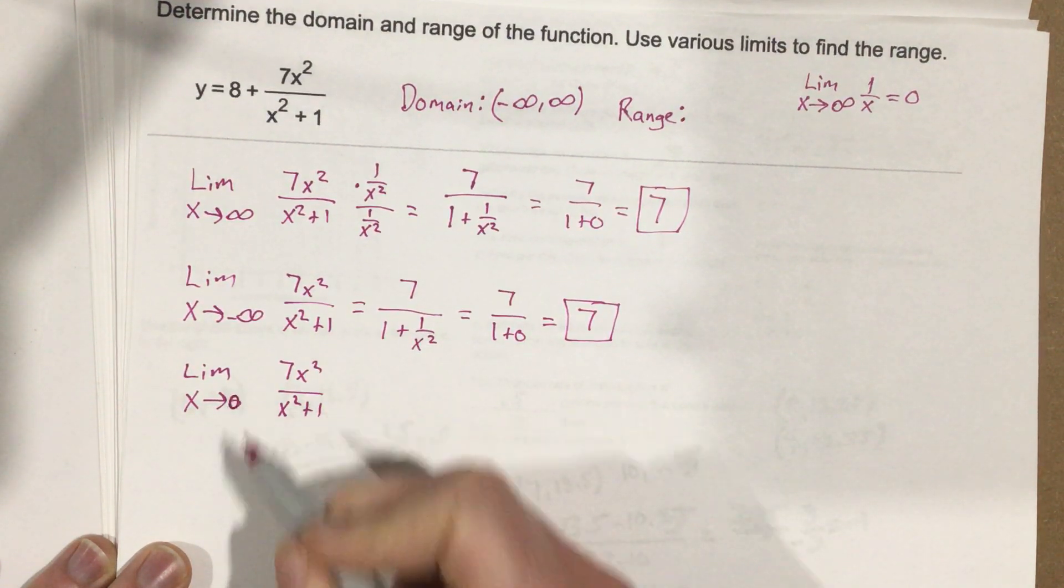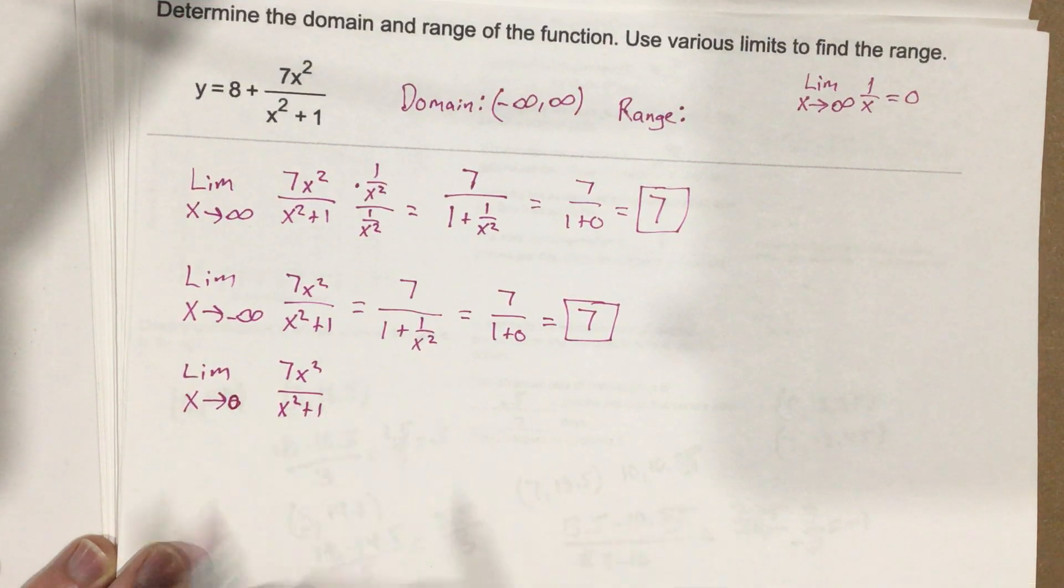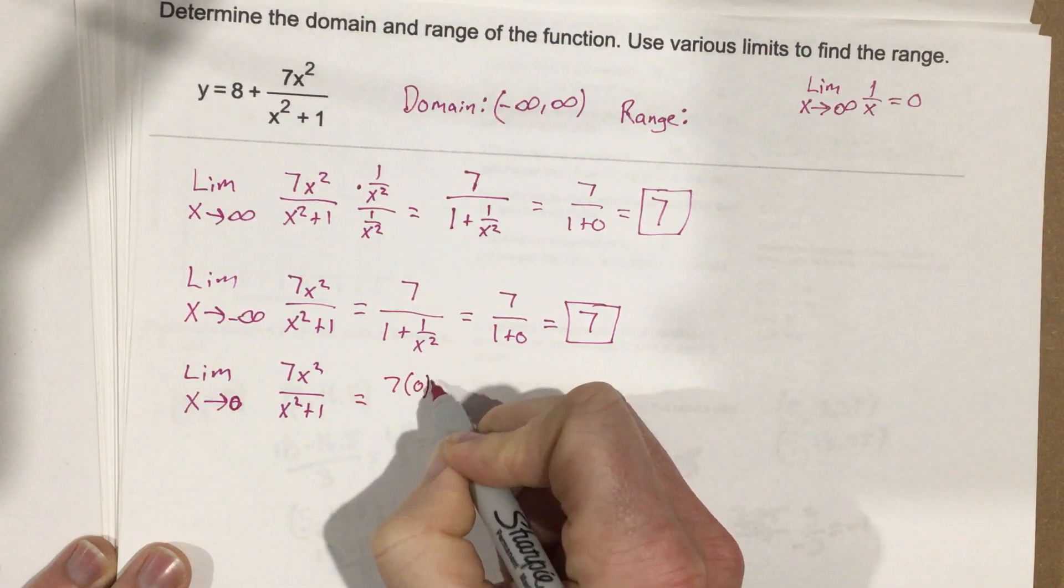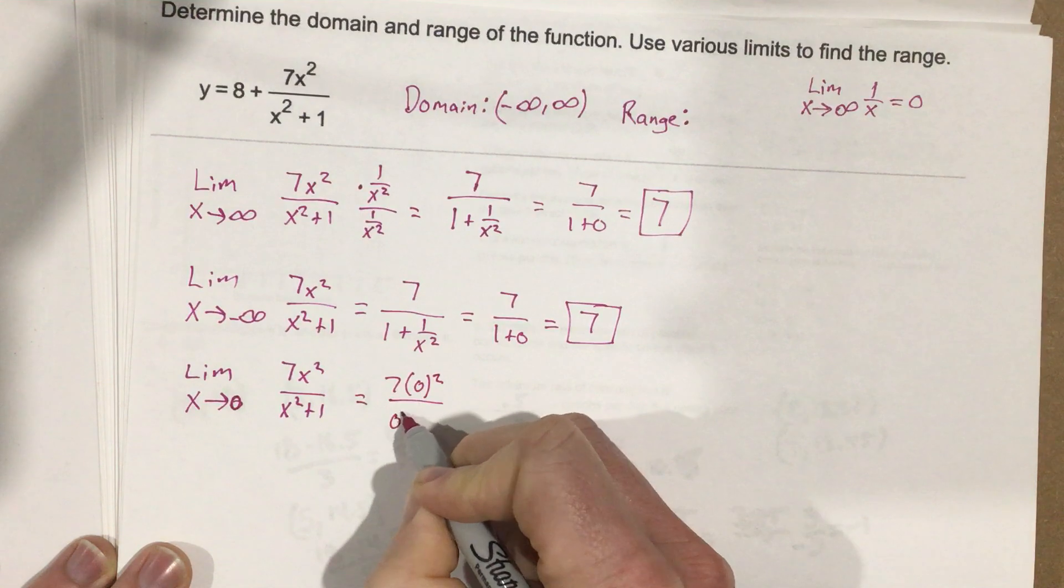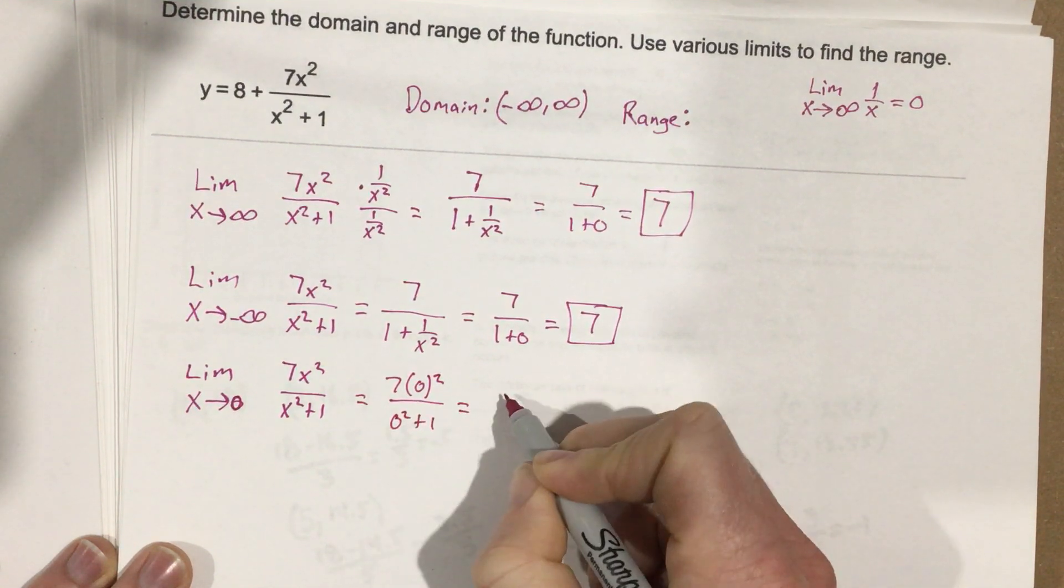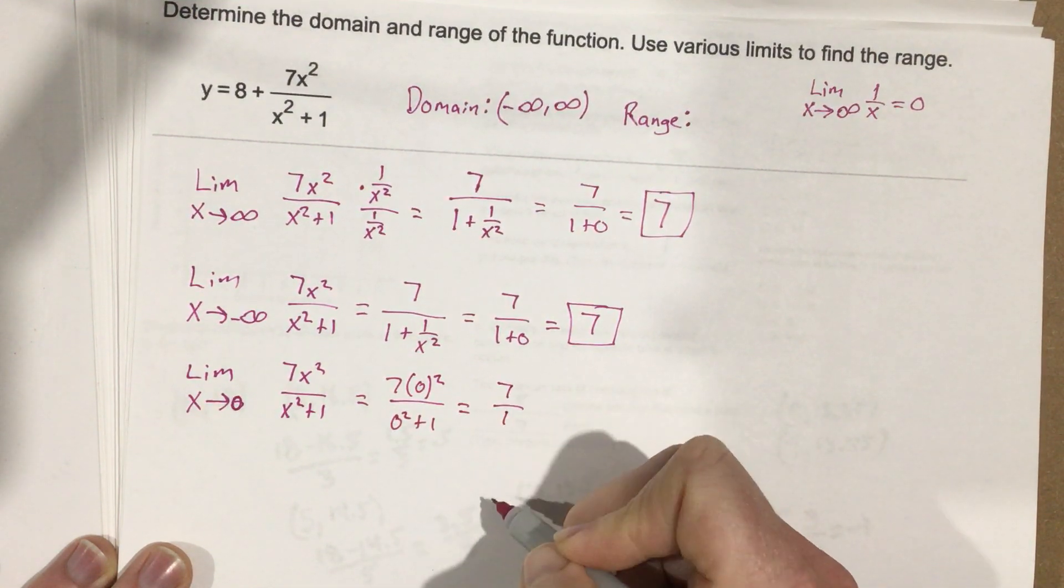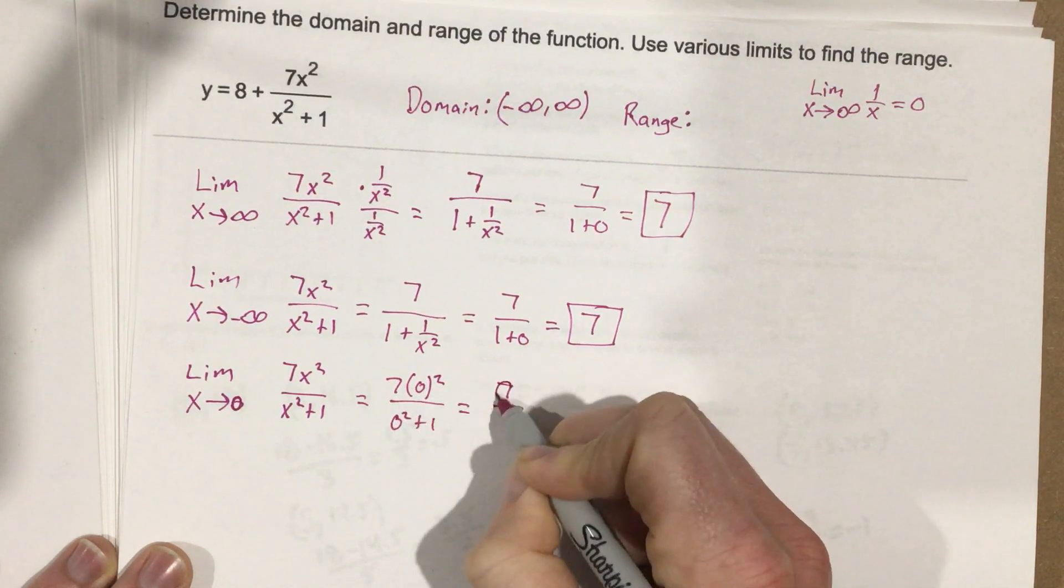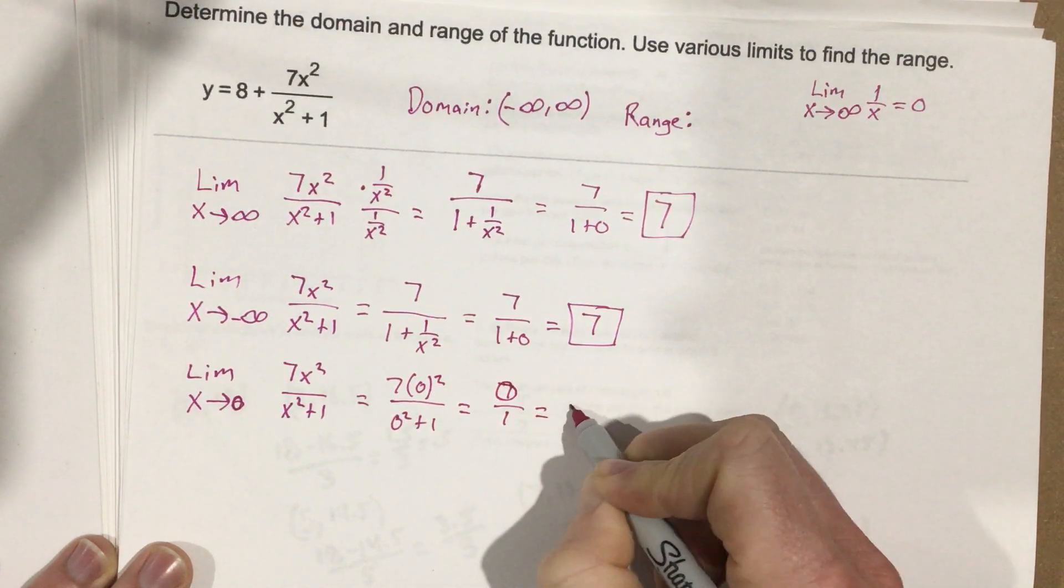We're going to take the limit as x approaches 0 for this. I can directly substitute it, so it's 7 times 0 squared over 0 squared plus 1, which gives 7 over 1. Not 7 over 1, 0 squared times 7, that's 0 over 1, which is 0.